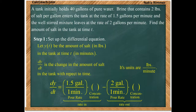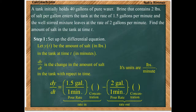The template is: the rate of change of salt equals the rate coming in minus the rate going out. Each of those requires a product — how fast the liquid is poured times its concentration. The pour rate in is one and a half gallons per minute; the pour rate out is two gallons per minute. The harder part is figuring out the concentration, which we'll do on the next slide.